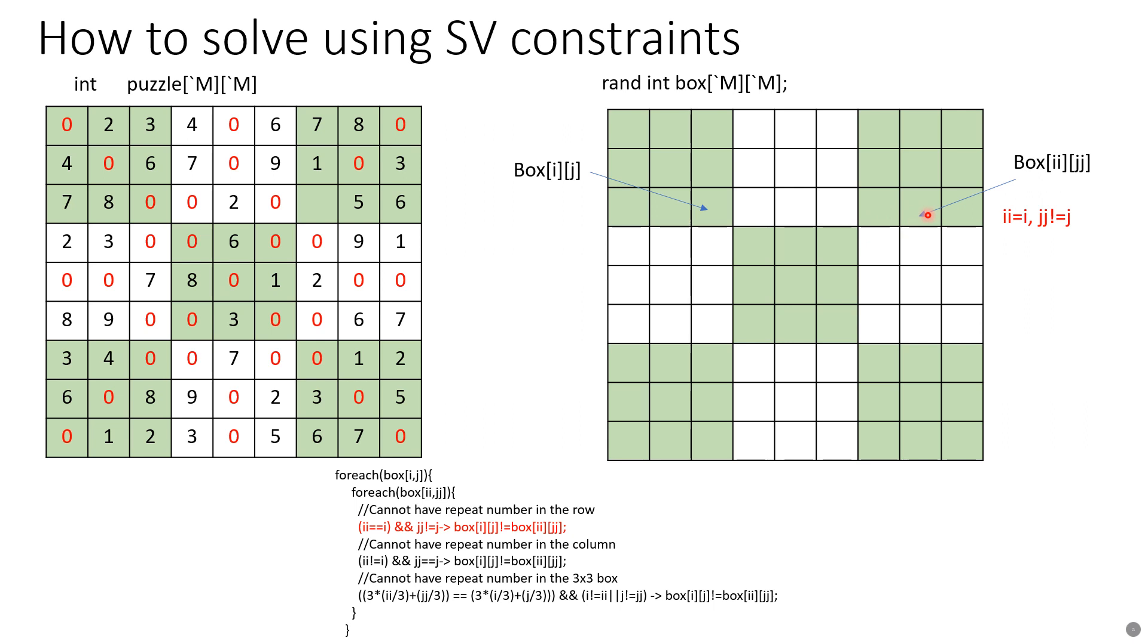This says that the values in the row must be unique. The reason we need jj not equal to j is because if both ii equals i and jj equals j, that is the same box and the same box will have the same value. Similarly the column constraint looks the same. Here we are saying ii not equals to i, meaning the rows are not the same but the columns are the same, and if that happens then the box values will be different and distinct.